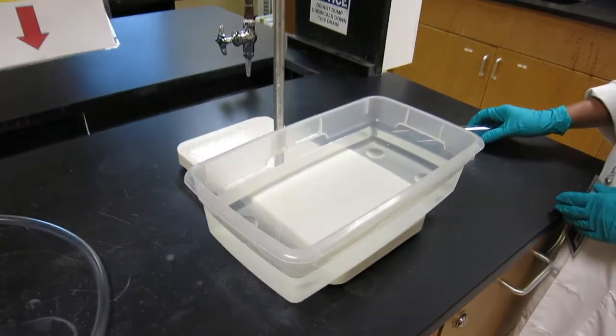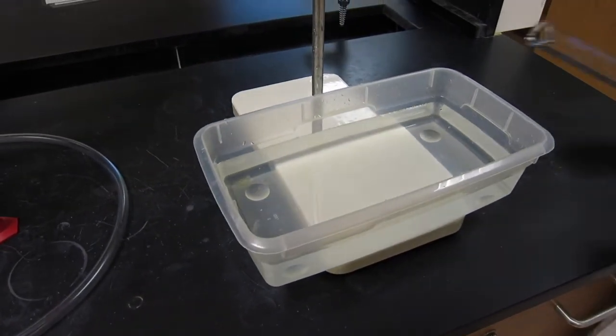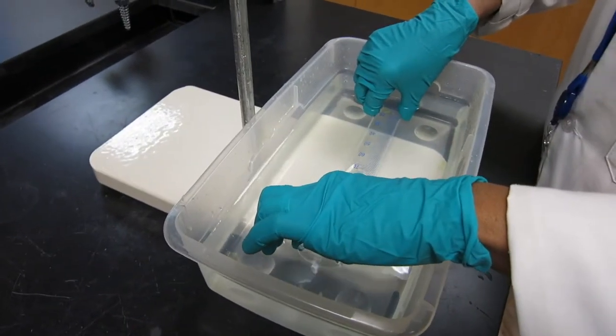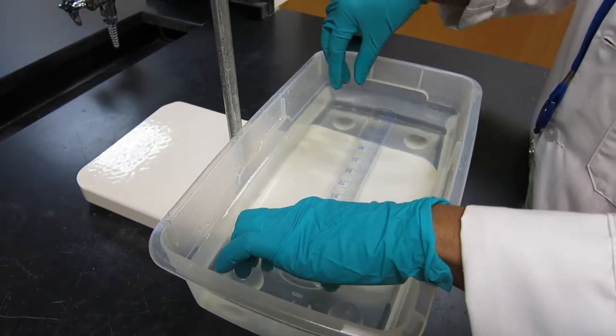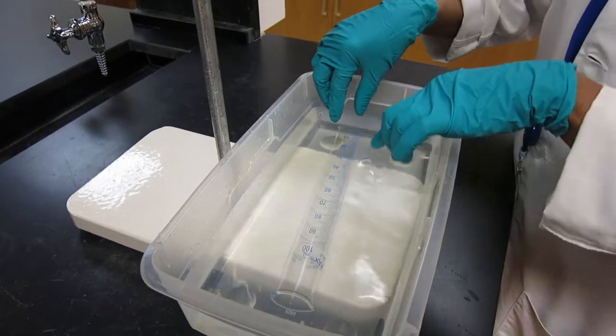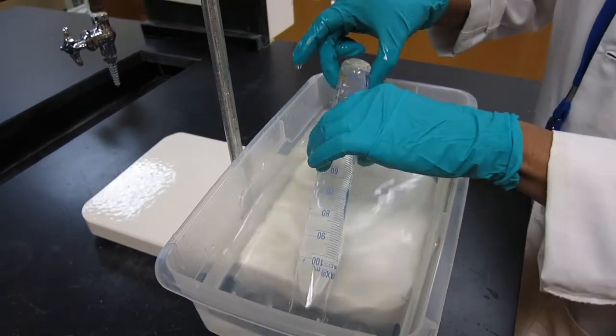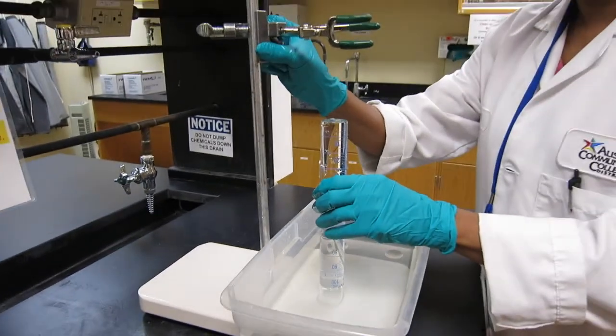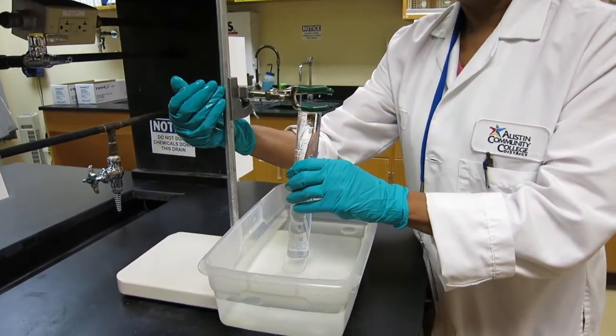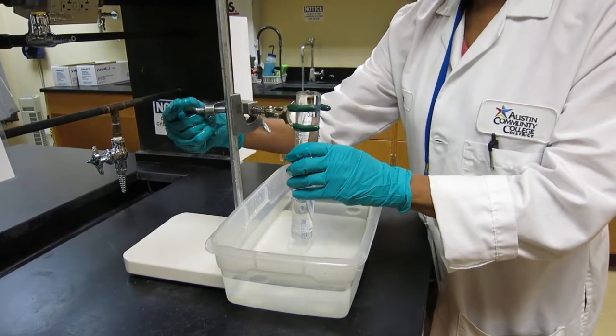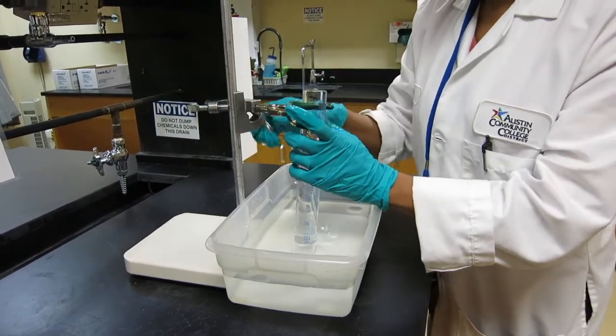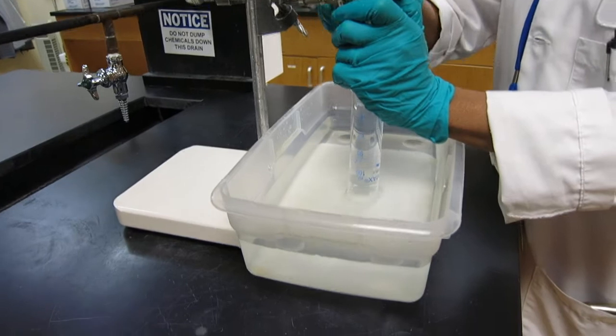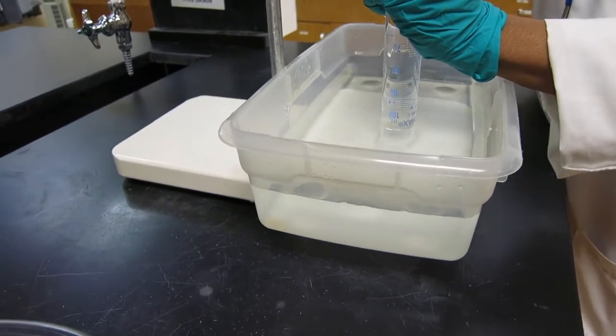So we fill out the container with deionized water. Right now we are going to submerge the graduated cylinder and fill it up with water to make sure there is no bubble. And we are going to make it stand like that. We are going to clamp the cylinder like so. Make sure you have enough room on the bottom.